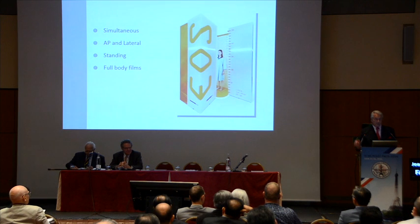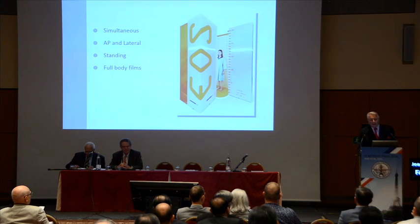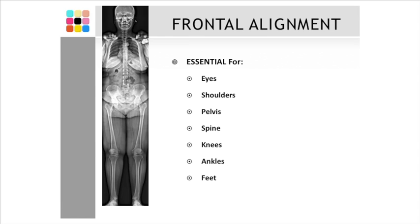And that was used by the company that created EOS. With EOS, we can have this type of image giving a frontal alignment — eyes, shoulder, pelvis, spine, knees, ankle, feet — everything on one image.